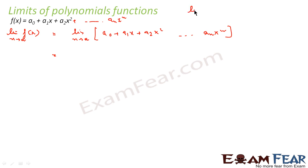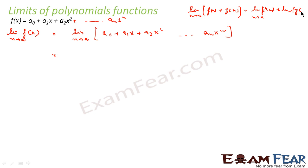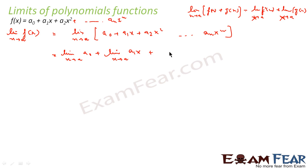Why? Because we know that the limit of f(x) plus g(x) as x tends to a is equal to the limit of f(x) as x tends to a, plus the limit of g(x) as x tends to a. So we can say this is nothing but limit x tends to a of a0, plus limit x tends to a of a1·x, plus limit x tends to a of a2·x², and so on.